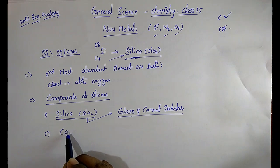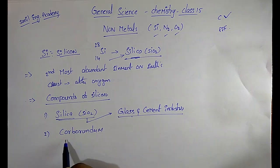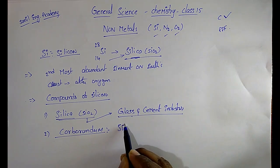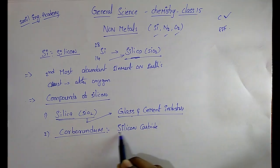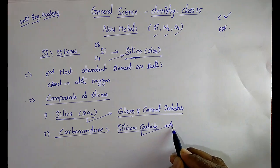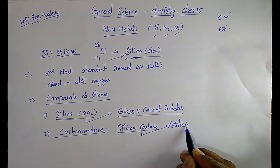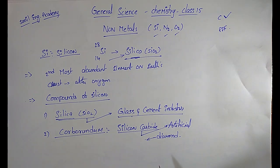The second compound is carborundum, also called silicon carbide. Silicon carbide is called artificial diamond because it glitters and is also a hard material.